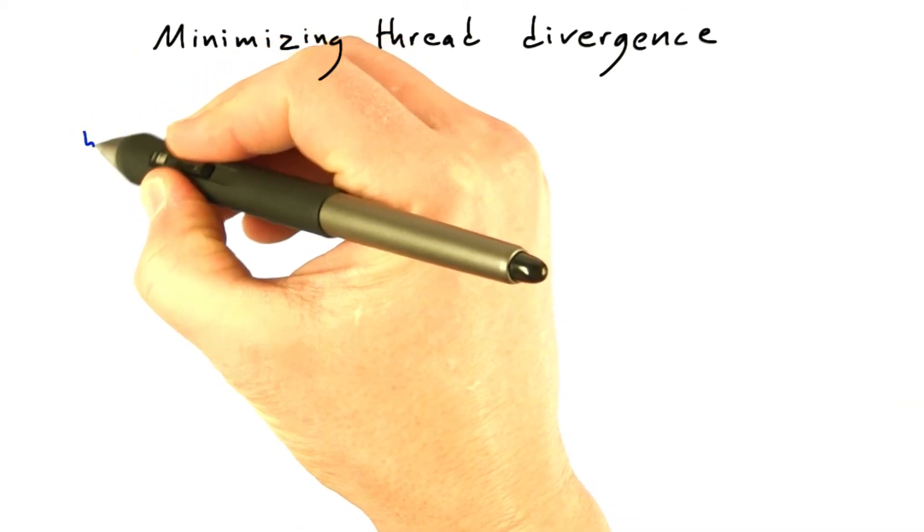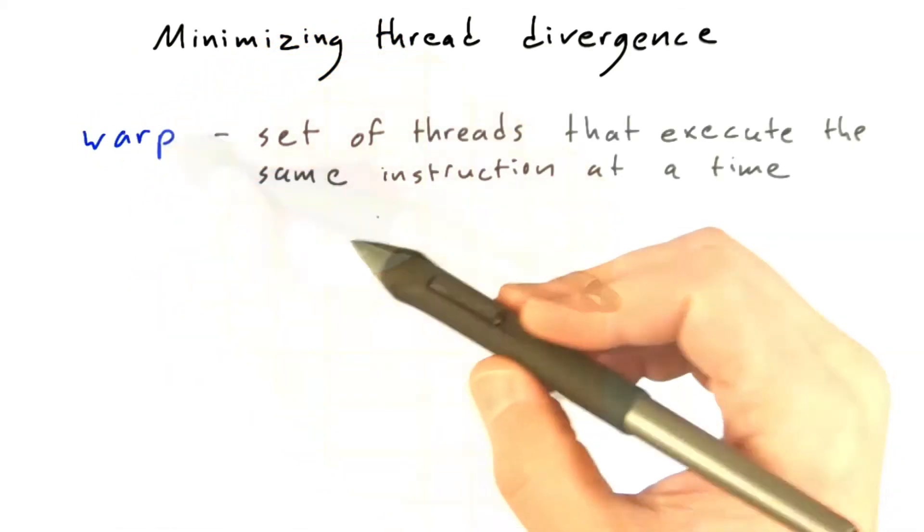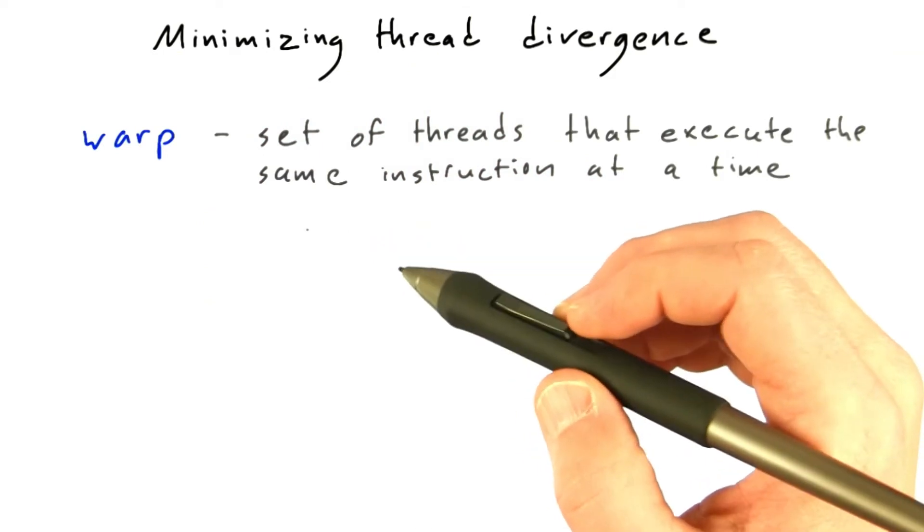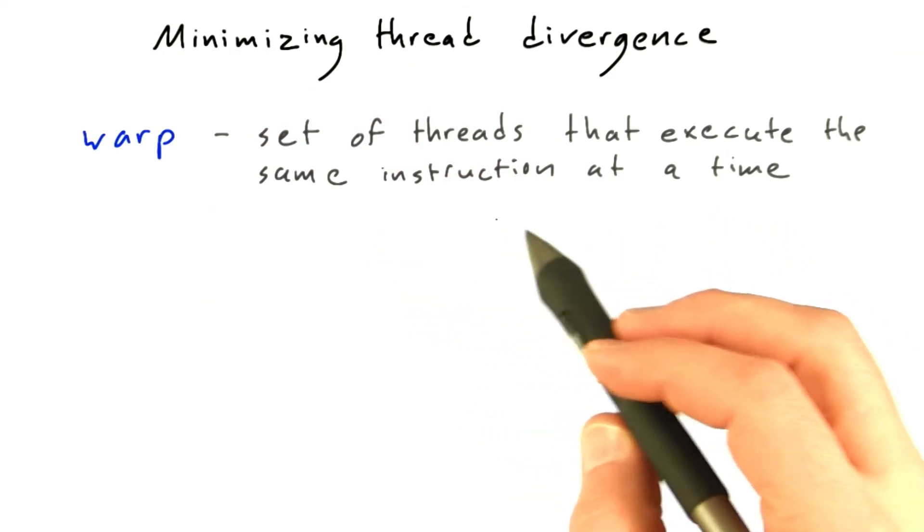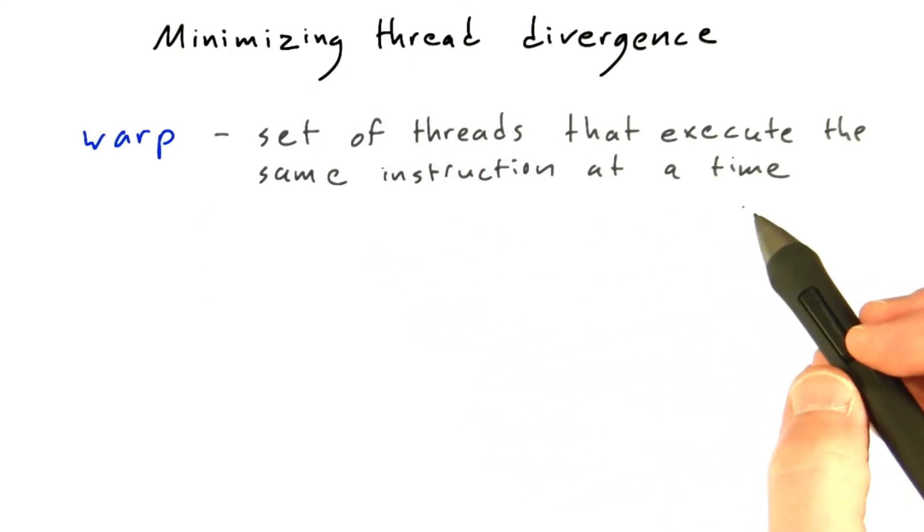In CUDA, this discussion focuses on the concept of a warp. Remember that a warp is a set of threads that operate in lockstep, all executing the same instruction at the same time on whatever data they happen to be processing.